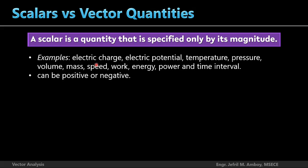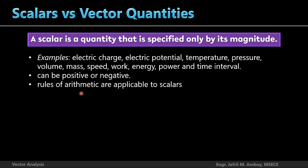However, scalars can also be positive or negative. For example, electric charges can be positive or negative. In thermodynamics, work can be positive or negative — these are called signed scalars. Scalar quantities obey the rules of arithmetic, so adding them is like adding numbers: 2 plus 3 equals 5, or 4 minus 3 equals 1. Vector quantities, however, are different because they do not obey the rules of arithmetic.